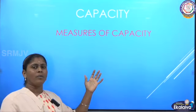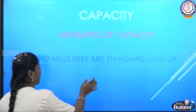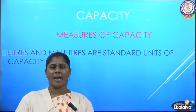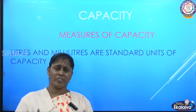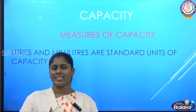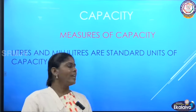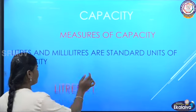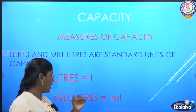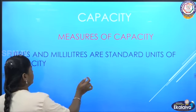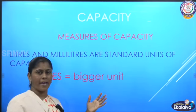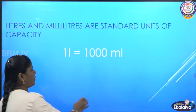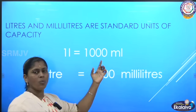Now, let us see what are the standard units used to measure capacity. We use cups, glasses and tumblers at home to measure the capacity of liquids, but the size and shape of these containers may vary from one another. So capacity requires standard units to measure. Litres and millilitres are the standard units of capacity. Litre is the bigger unit and millilitre is the smaller unit. One litre is equal to one thousand millilitres.